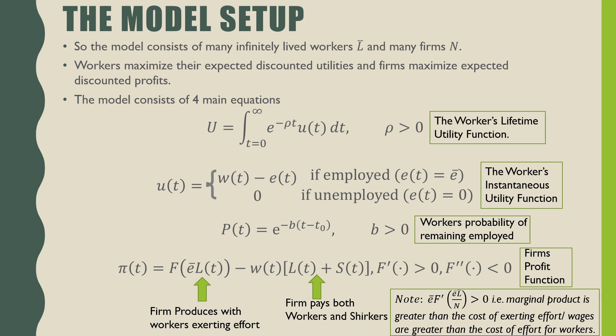The effort exerted is a fixed amount, e-bar, and it goes between two values: e-bar and zero. If they're unemployed, they're going to get zero utility, putting in zero effort. The number e raised to the power of negative b times (t minus t-naught) — here b is our exogenous job destruction rate, a hazard rate.